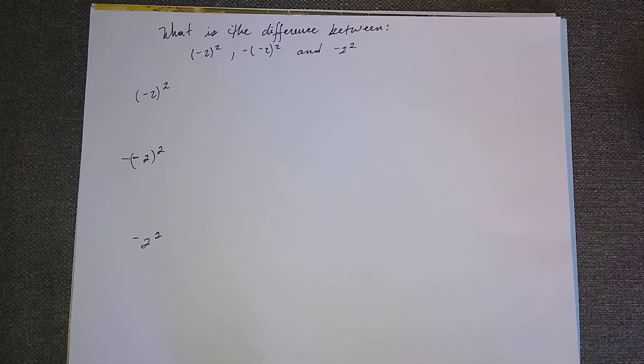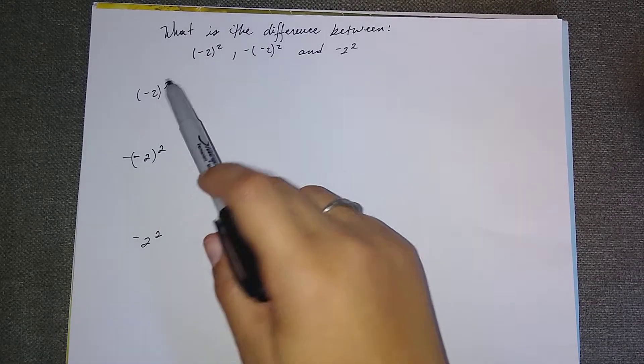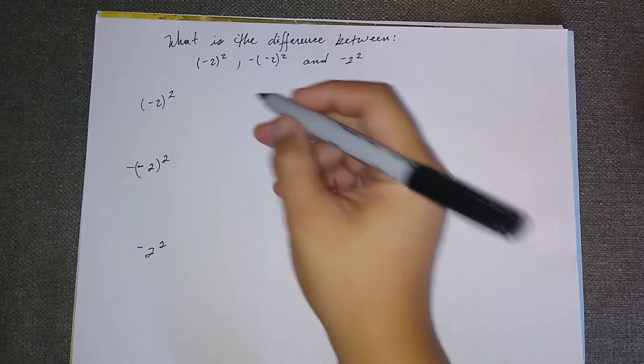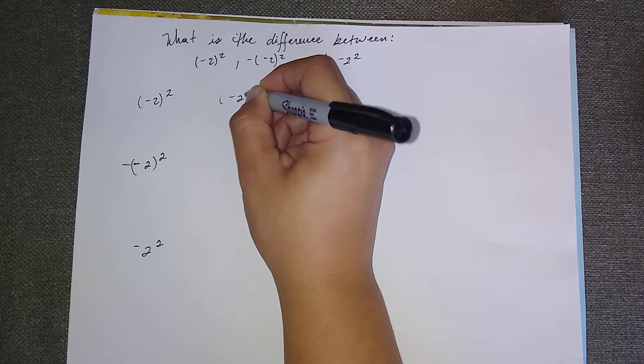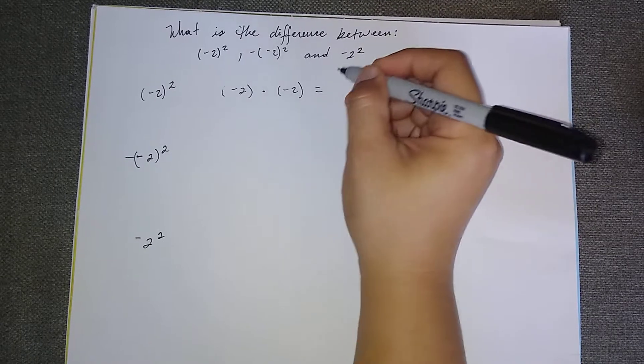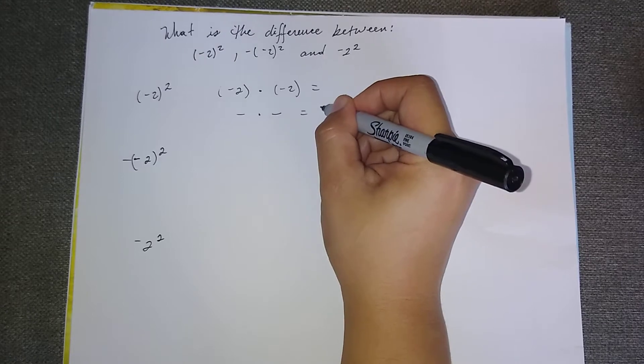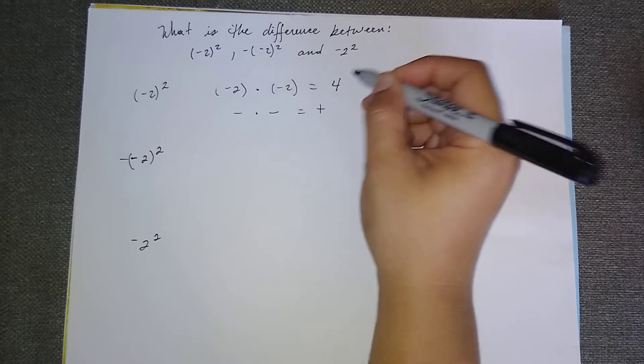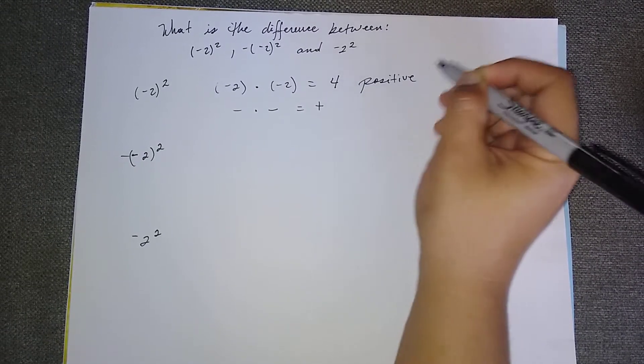So the first equation here reads parenthesis negative two square. And how do we solve this? Well, we do parenthesis negative two times parenthesis negative two. And as we know that a negative times a negative will give us a positive. So negative two times negative two will give me four, positive four.